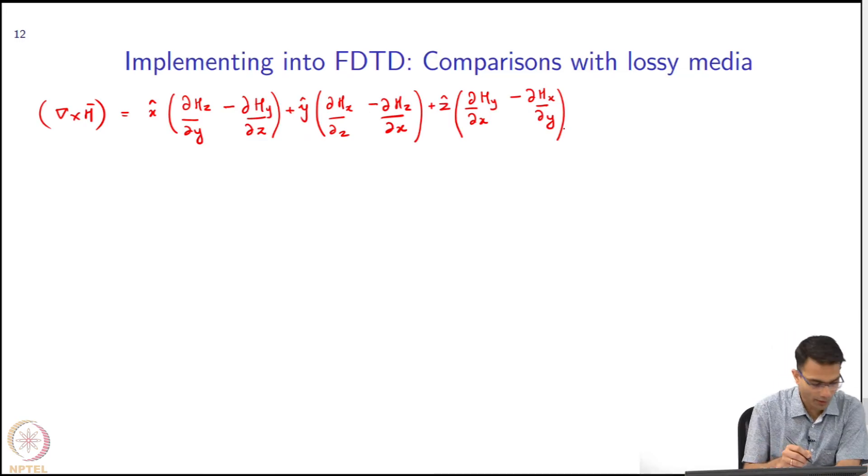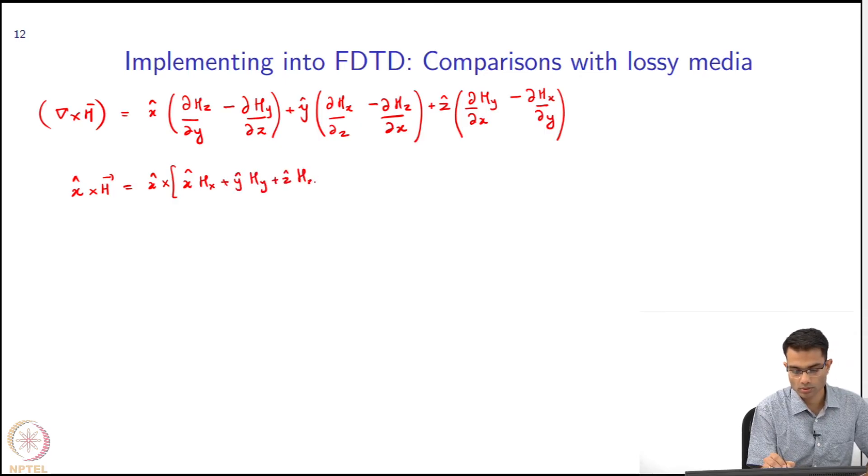So what I can do from here is extract out the common partial derivative terms. To see that, let us have a look at one other thing. Supposing I ask you: what is x hat cross H? x hat cross H will be - what do I get from here? There is only a z hat and a y hat, so z hat is going to be H_y and I am going to get a minus y hat H_z.